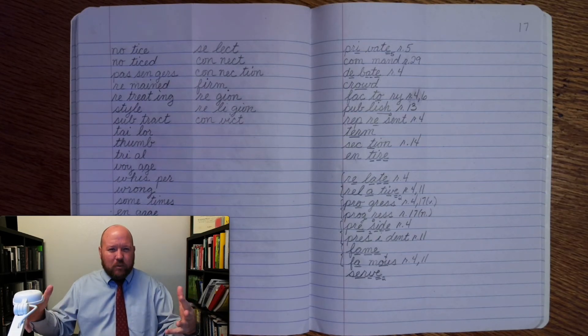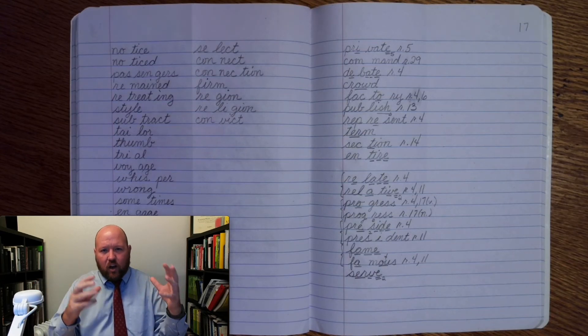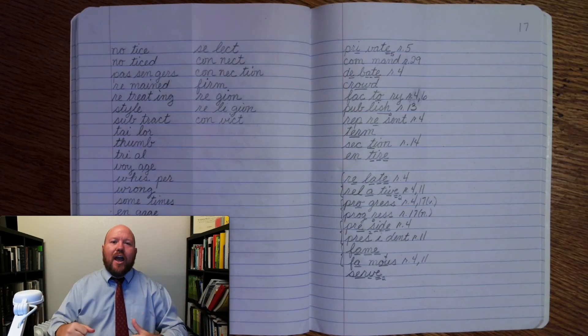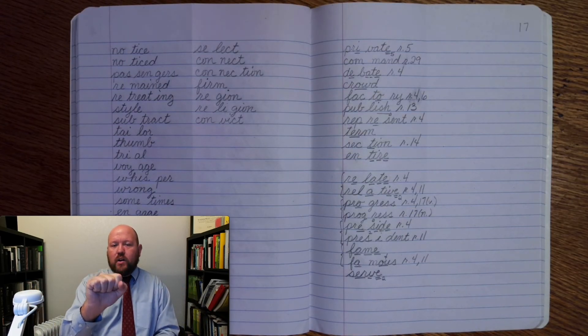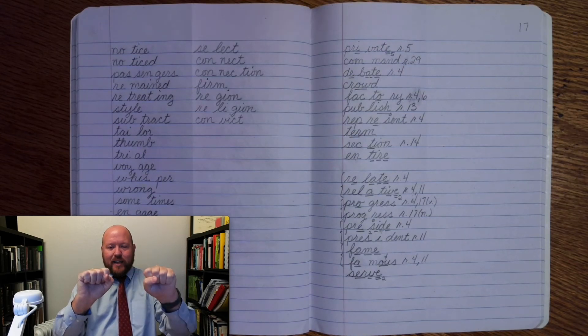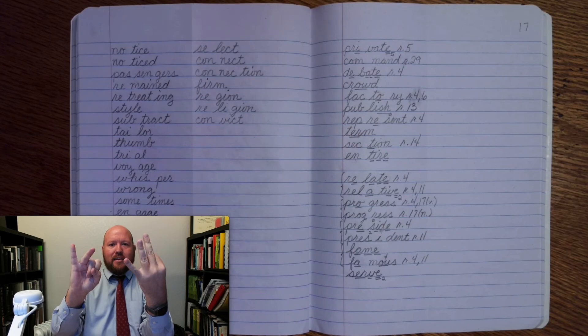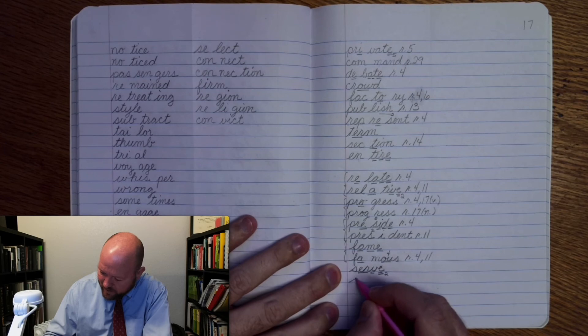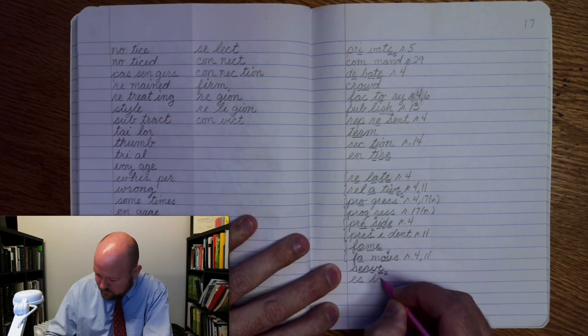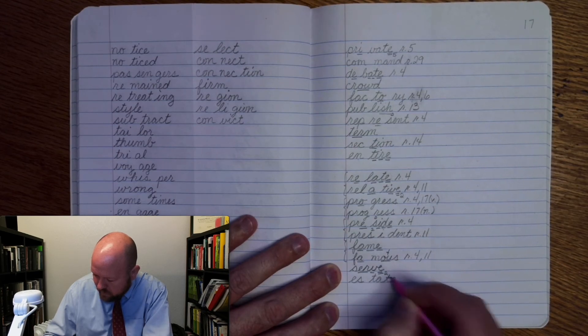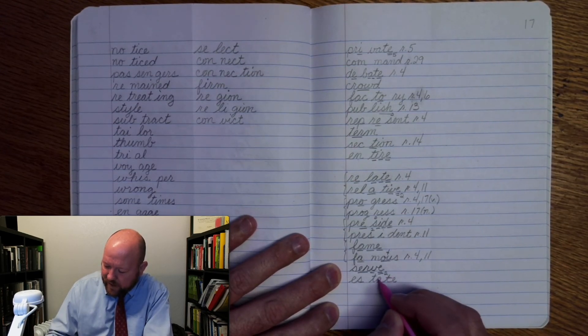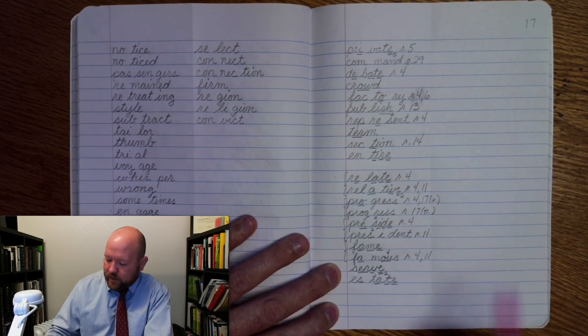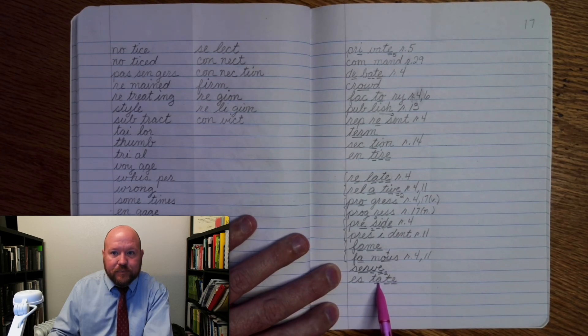The next word is estate. So, an estate is everything that someone owns. So, think of someone who owns a house. They have cars. They have electronics. They have clothes. All of those things make up their estate. Estate. Base word, estate. E-s-tate. E-s. T-a-t-e. Estate. Write estate. E-s-tate. Markings. E-s. T-a- once. T- once. E- once. Estate. Here, this e is allowing the a to say a. Estate.